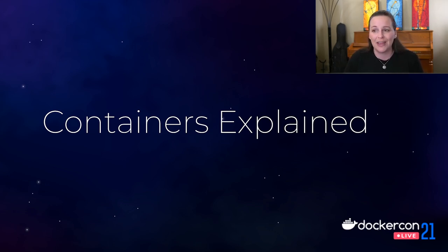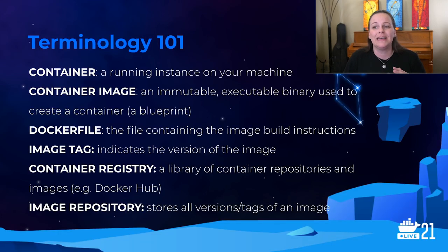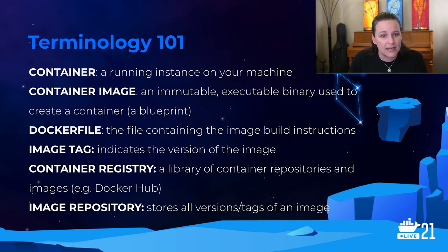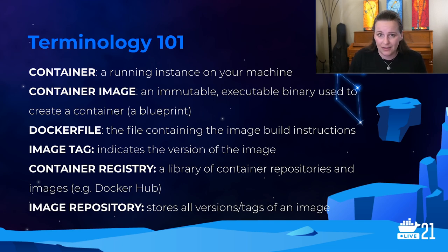Let's go through some simple terminology — the very first words you're going to learn when you jump into working with containers. Container: it is a running instance on your machine. We discussed the difference between a container and a VM — you do not have to choose between containers and VMs; in fact, it is a common use case to have containers running on VMs. Container image: this is an immutable executable binary used to create a container — it is the blueprint for that container. The Dockerfile is the file containing the image build instructions; that's how you create the image.